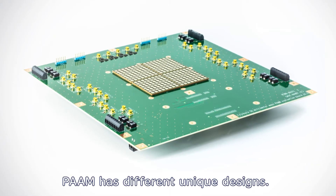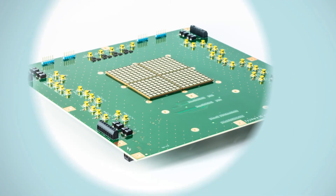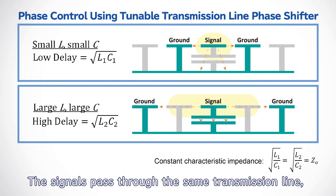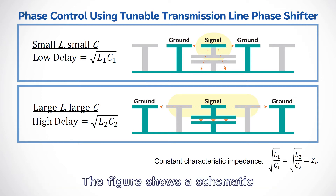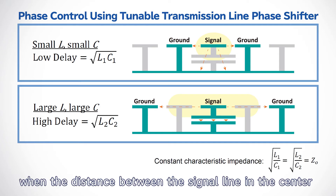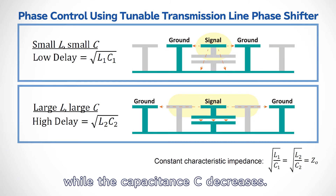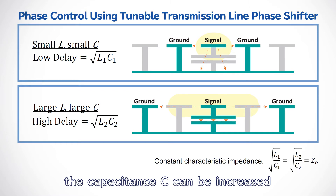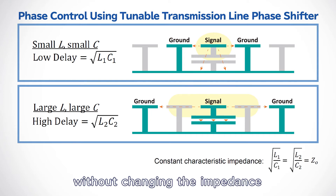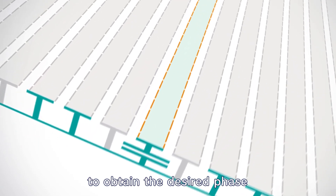POM has unique designs. Here is an explanation of the principle of Fujikura's original phase shifter using a cross-sectional view. Fujikura's phase shifter employs a system called Variable True Time Delay. The signals pass through the same transmission line, and the phase can be adjusted as needed. Generally, when the distance between the signal line in the center and the grounds on both sides is increased, the inductance L increases while the capacitance C decreases. By using our unique system, the capacitance C can be increased even in this case. This system allows changing the phase by turning the switch on and off without changing the impedance of the transmission line. Connecting many such sections enables the phase shifter to obtain the desired phase separately from the amplitude.